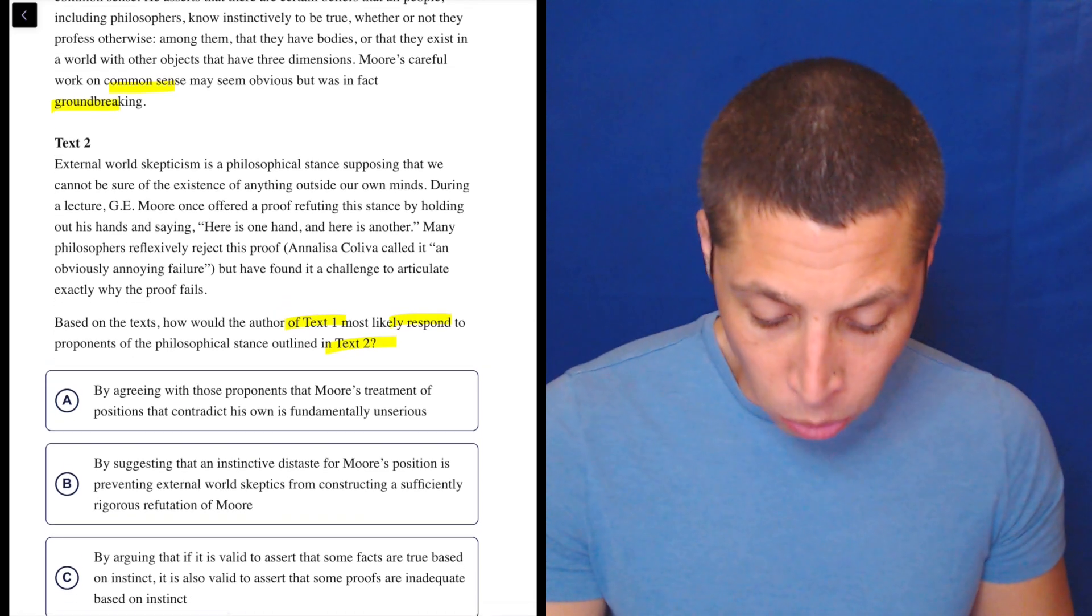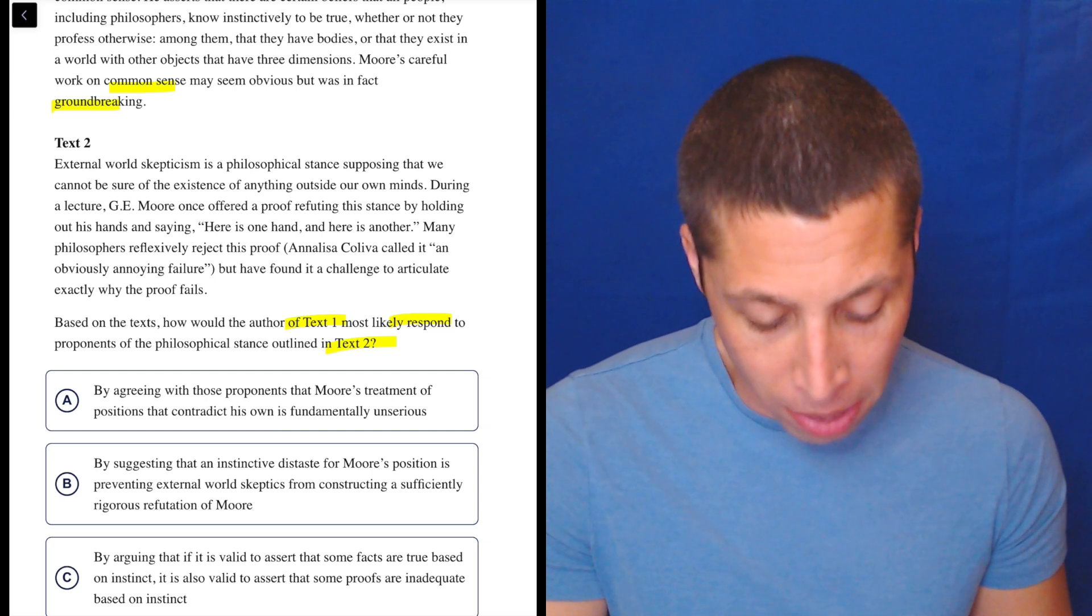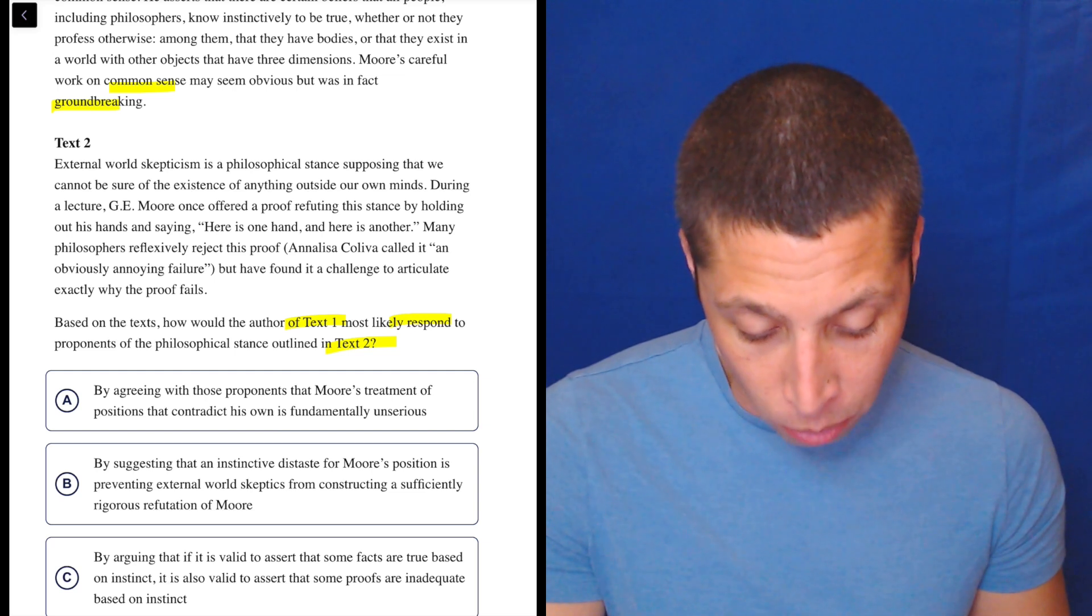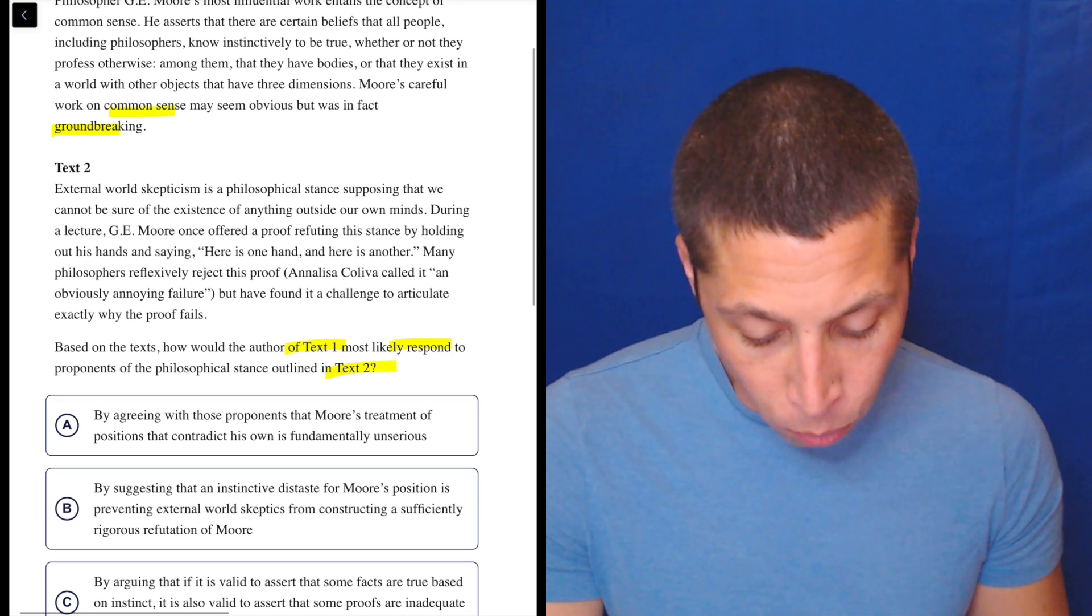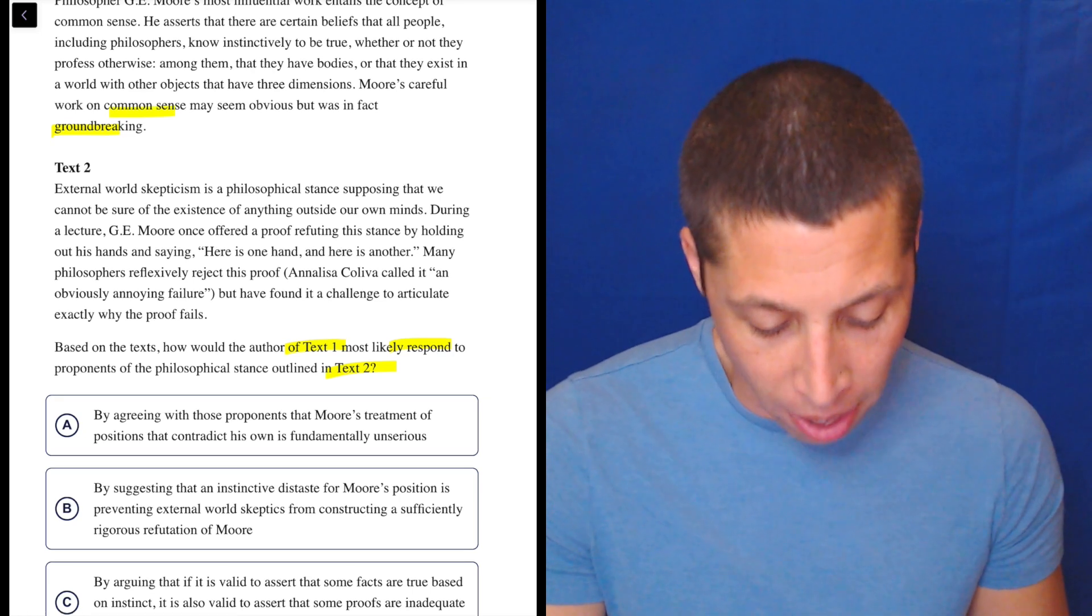Let's look at two. External world skepticism is a philosophical stance supposing that we cannot be sure of the existence of anything outside of our own minds. During a lecture, G.E. Moore, and it's the same guy, once offered a proof refuting this stance by holding out his hands and saying, here's one hand and here's another.